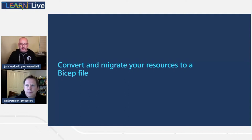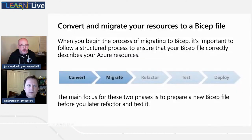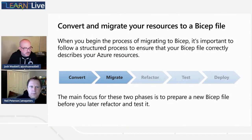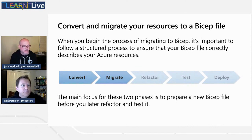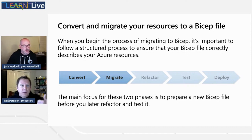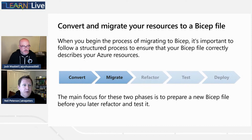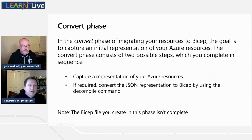We're going to get into the first section: the first two phases — convert and migrate your resources to a Bicep file. The convert phase: one scenario is that you've been deploying using infrastructure as code for a while, you've maybe got a source repo where you've got your JSON templates, you've deployed them many times. Converting here would be taking that JSON template and converting it over to a Bicep template. The good news is we've got great tooling for this.